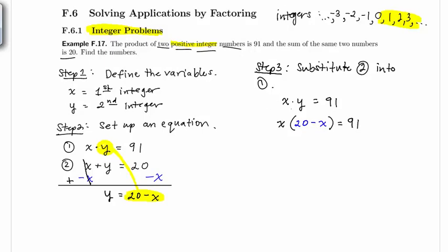And if I distribute this x into the parentheses we can proceed to solve this. So step 4 would be to solve the equation. So if I did that I would get x times (20 minus x) is 91. Distributing the x to each term in the parentheses I would get 20x minus x squared equal to 91.